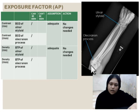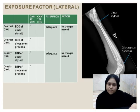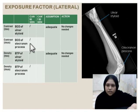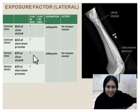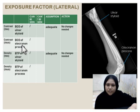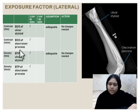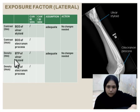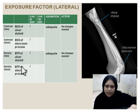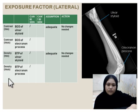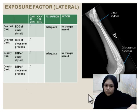Bony cortical outline and trabecular pattern of thick structure which is olecranon process can be seen, so MAS is adequate and no change needed. For lateral, bony cortical outline of thin structure — ulna styloid — can be seen, and contrast for thick structure — bony cortical outline of olecranon process — can be seen, so exposure is adequate. For density, bony trabecular pattern of ulna styloid and olecranon process can be seen, so MAS is also adequate.